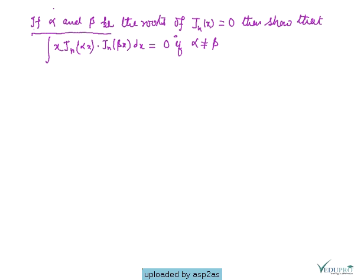If alpha and beta are the roots of Jn(x) = 0, then we have to prove that the integration of x·Jn(αx)·Jn(βx)dx is equal to 0, where alpha is not equal to beta, with integrating limits from 0 to 1.